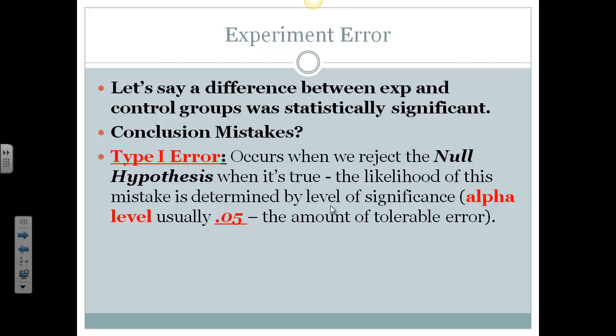Now the likelihood of this happening is determined by the alpha level, and we set the alpha level before we start our research. The alpha level in social sciences is typically 0.05, and that represents the amount of tolerable error, how much error can we feel comfortable with. This basically in turn means that if we do find a statistically significant difference, that we're 95% or more confident that our results are due to the manipulation of the IV, or that there's less than a 5% chance of mistake. So our confidence level, I mean we could say we're 95% or 96%, 97% sure that this result happened because of our independent variable, and that's pretty powerful.